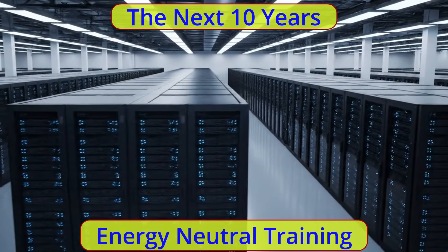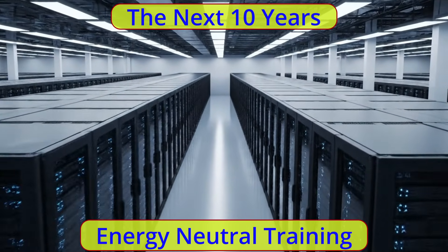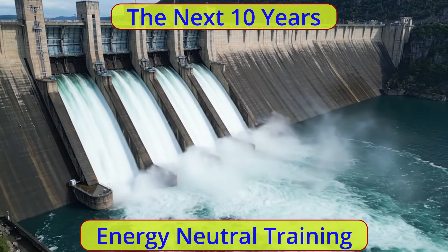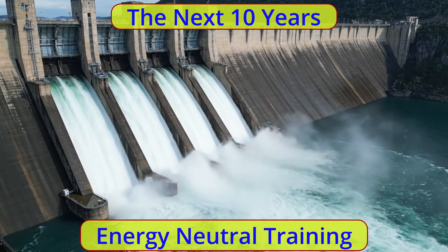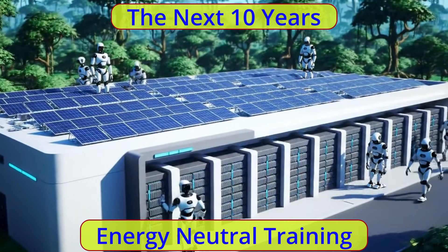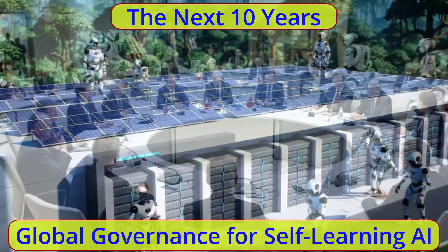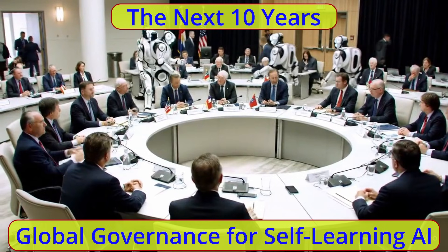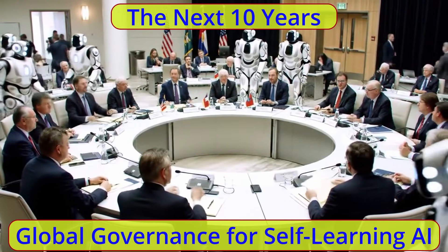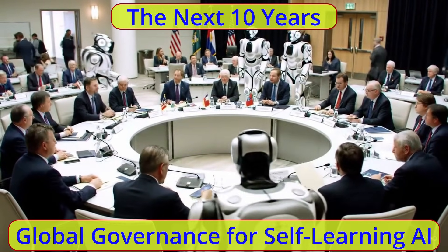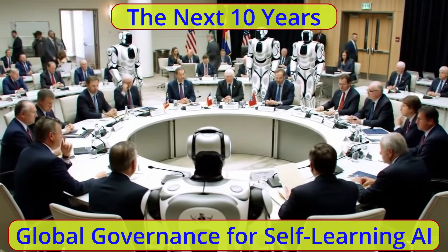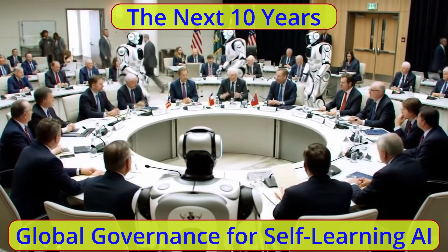Energy-neutral training: breakthroughs in neuromorphic hardware and algorithmic efficiency bring training emissions close to zero, so AI growth no longer conflicts with climate goals. There is also broader adoption in low-resource regions, and global governance for self-learning AI through international accords that set limits, share safety mechanisms and certifications, reducing the risk of an AI arms race.